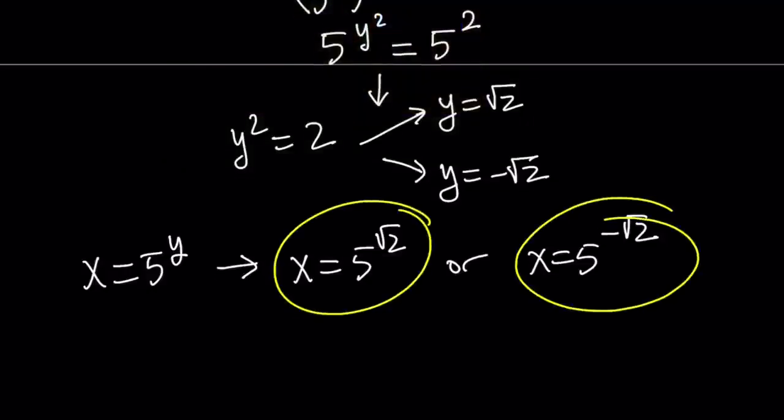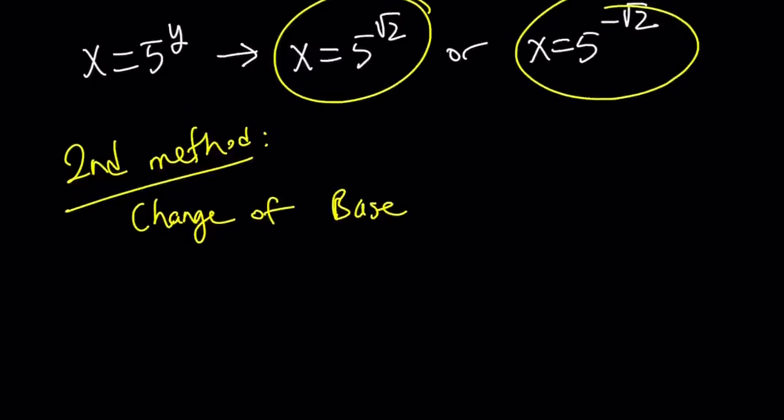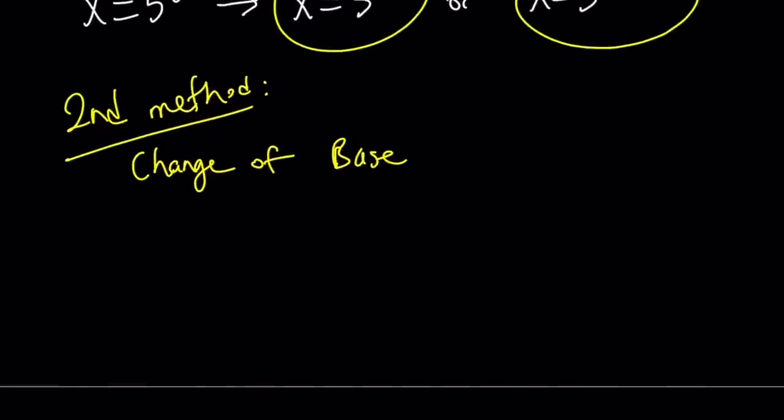Let's go ahead and talk about the second method. For my second method, I want to do something different. So I want to change the method. And I'd like to use change of base. Change of base is also a very cool formula. You can basically, if you have the log of something, you can turn it into a quotient with whatever base you want.